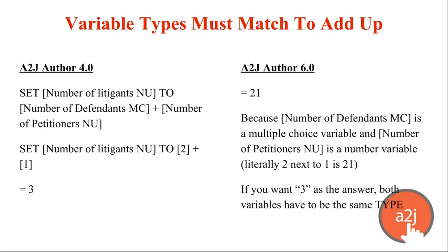In A-to-J 4, you could add different types of variables together. Here's an example that was actually out in the wild: they tried to set a number variable (number of litigants, NU) to a multiple choice value plus a number — expecting 2 + 1 = 3. But in HTML it's very difficult to match a string (which is what a multiple choice variable is) to a number and get 3. What A-to-J 6 was producing was 21 — concatenating them instead of adding. If you want to add, both variables must be numbers.